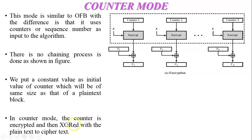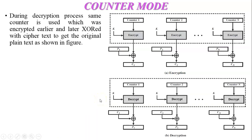Now in counter mode the counter is encrypted then XORed with the plaintext to produce the ciphertext as we have already discussed. During the decryption process the same counter is used which was encrypted earlier and later XORed with the ciphertext to get the original plaintext shown in figure.